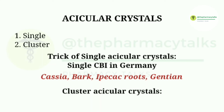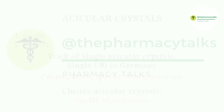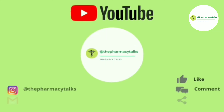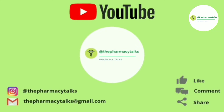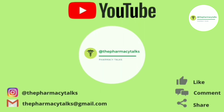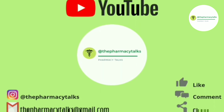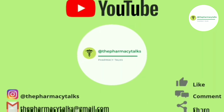Now let's talk about the secondary metabolites of cluster acicular crystals. It includes squill and hyoscyamus. So that's all for today. We hope you find this video helpful. Please like the video and comment any topic which you want to learn in an easy way.